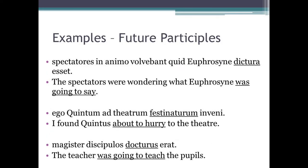And finally, let's have a look at a few examples of future participles. 'The spectators were wondering what Euphrosyne was going to say.' 'Ego Quintum ad theatrum festinaturum inveni' — I found Quintus about to hurry to the theatre. 'Magister discipulos docturus erat.' And you'll notice that all of these sentences include either 'about to' or 'going to' in the English translation to denote a future.